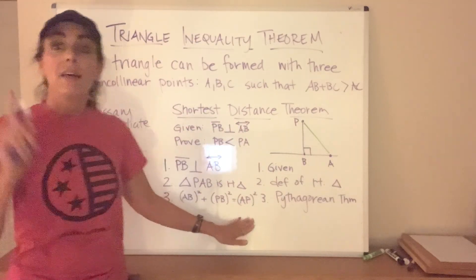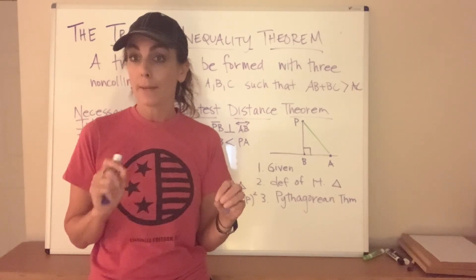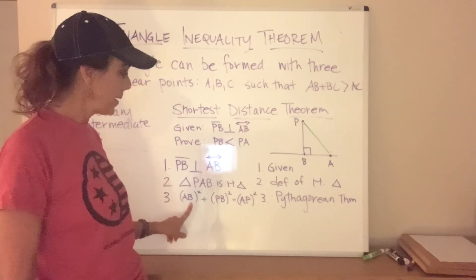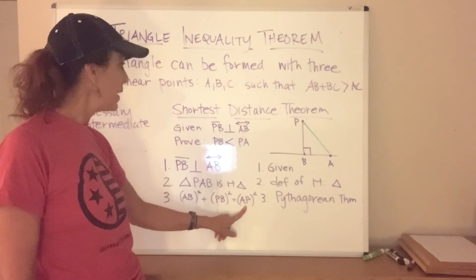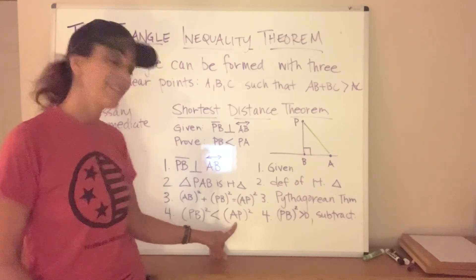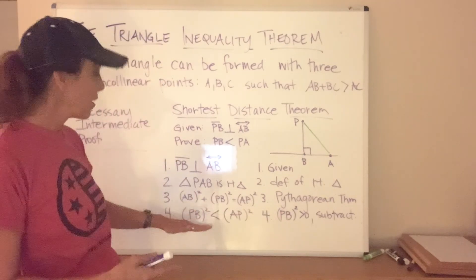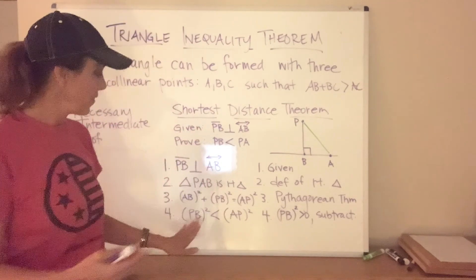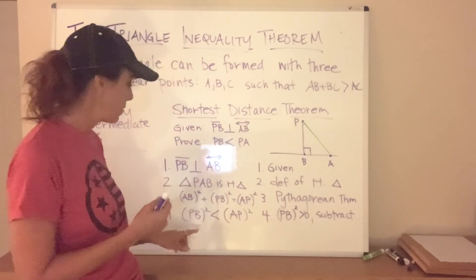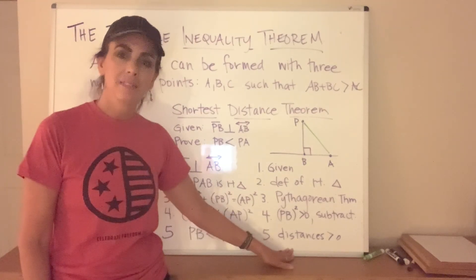Now we're going to pull out a trick from our last proof — we take away part of one side of an equation and turn it into an inequality. In this case, we take away the AB² term, which means this side becomes less than the other side. What we have now is that the distance from P to B squared is going to be less than the distance from A to P squared, because AB² is greater than zero and we subtracted it away. Since the squares follow that inequality and the distances are positive, we can conclude that the distance from P to B is less than the distance from P to A.